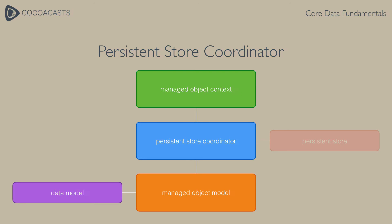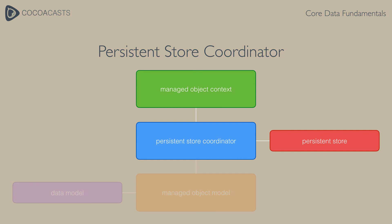Remember that the managed object context keeps a reference to the persistent store coordinator. With the Core Data stack set up, the application is ready to use Core Data to interact with the application's persistent store. In most cases, an application interacts with a persistent store through the managed object context. You will rarely, if ever, directly interact with the persistent store coordinator or the managed object model. The NSManagedObjectContext class is the class you interact with most frequently.